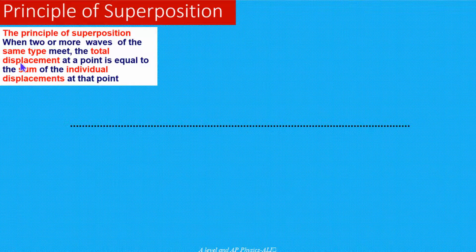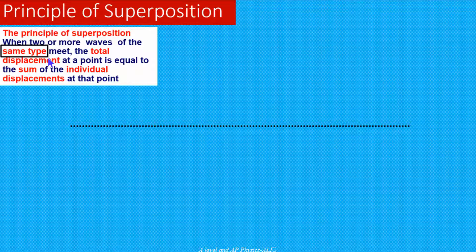So here we have to be very clear about two points. The first thing we need to understand is what does it mean by same type. Same type means you can add sound with sound or you can add light with light, but you cannot add sound with light. The second thing we need to understand is displacement. Displacement is a vector quantity, so displacement can be positive and displacement also can be negative.